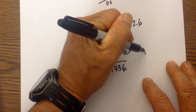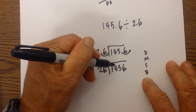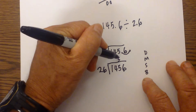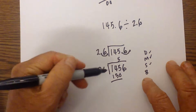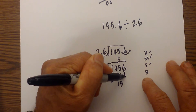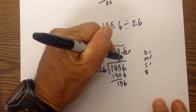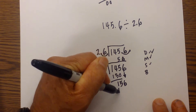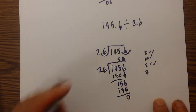Now we just divide again — dad, mom, sister, brother. Can't divide into 1, can't divide into 14 because they are less than 26. 145 divided by 26, I believe we will go 5 times. I then multiply: 5 times 26 is 130. Next I subtract: 145 minus 130 is 15. Next I bring down, so I have 156, and 156 divided by 26 is 6. Next I multiply: 6 times 26 is 156. I subtract: that is 0. So the answer is 56.